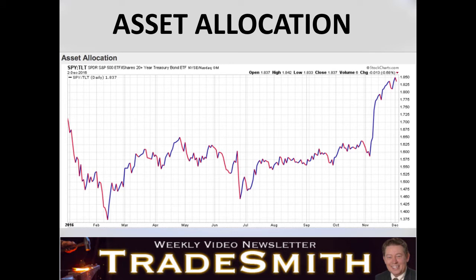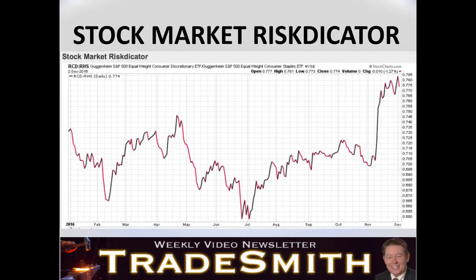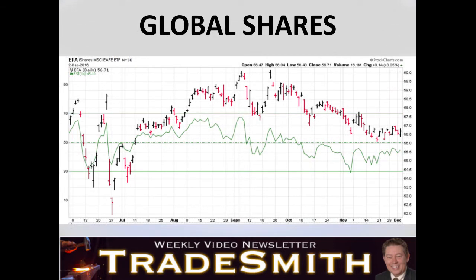Asset allocation: we're continuing to see that flood of money come out of the bond market and into the stock market — big time, really big time. Our stock market risk indicator is staggering around but at a high level, telling us that the market is looking for more risk. It doesn't want conservative stocks; it wants risky stocks. Global shares — I am so bored with this chart. It's not even going down fast enough that I want to get short. It's just drifting lower, so why bother? Stand aside.